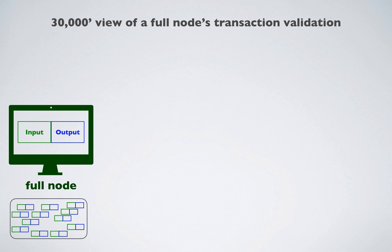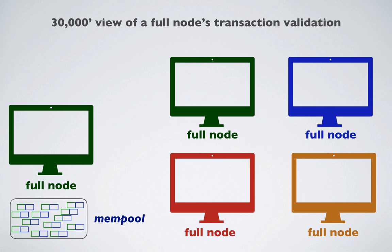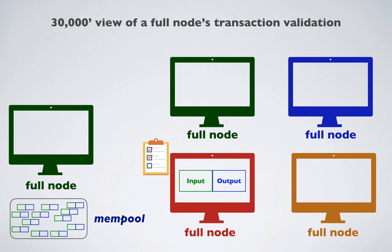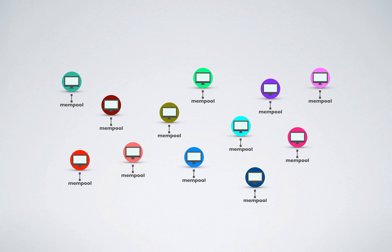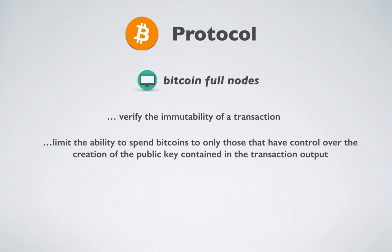Once validated, the transaction is put into a pool of awaiting transactions on the full node called the mempool. The node will also broadcast the transaction to other random nodes so they can perform their own validation. At this point, we've got a bunch of full nodes on the network that contain a bunch of verified and awaiting transactions. We've established that the protocol can verify the immutability of a transaction as well as limiting the ability to spend bitcoins to only those who control the public key contained in the transaction output.